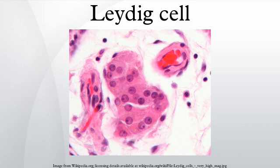Leydig cells release a class of hormones called androgens. They secrete testosterone, androstenedione and dehydroepiandrosterone when stimulated by the pituitary hormone luteinizing hormone. LH increases cholesterol desmolase activity, leading to testosterone synthesis and secretion by Leydig cells.